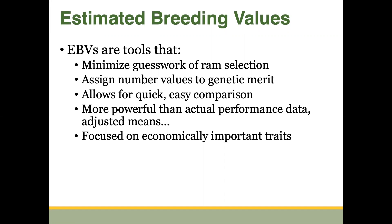We're taking out the environmental aspects and the management aspects when we're actually looking at these animals, just focusing on the genetic potential. These EBVs are extremely powerful statistics — more powerful than actual performance data, more powerful than a weaning weight or even an adjusted weaning weight or an adjusted post-weaning weight. We'll get into where that power comes from here in just a few slides.